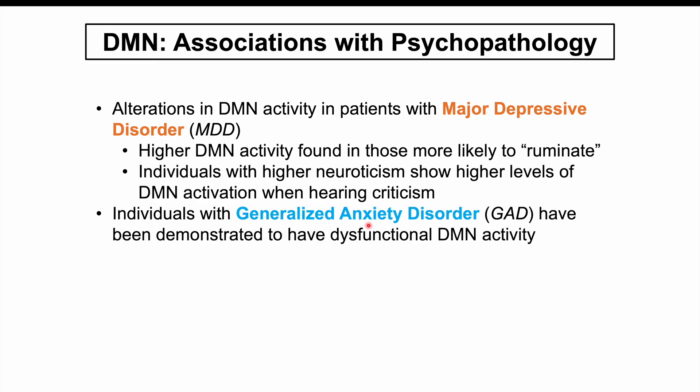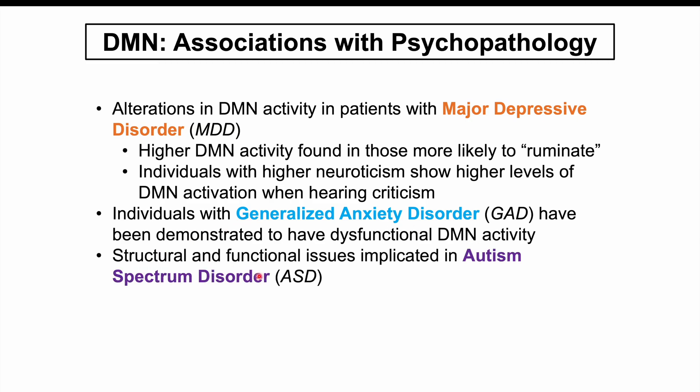Individuals with generalized anxiety disorder also show dysfunctional default mode network activity. Since the network is involved in thinking about the future, patients with GAD may show higher activity because they're dwelling on future anxiety-provoking possibilities. Additionally, there are structural and functional issues in the default mode network in patients with autism spectrum disorder, which makes sense given the network's role in social awareness and cognition — integrating what someone said before with what they're saying now to engage socially.